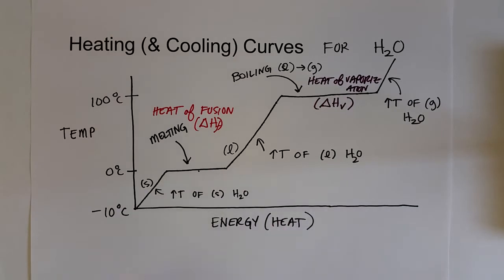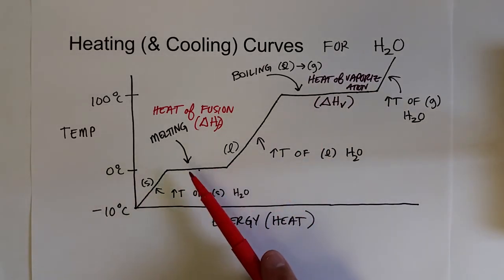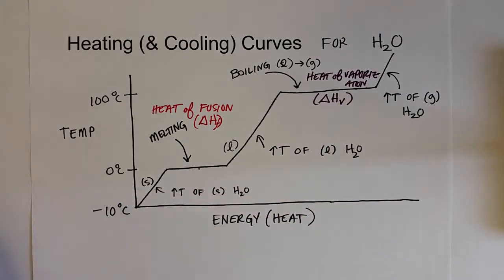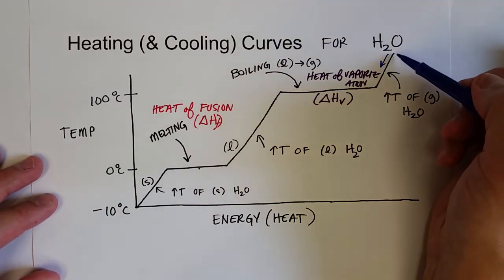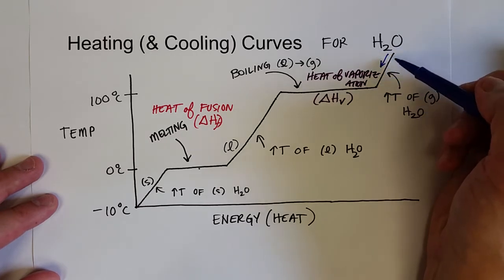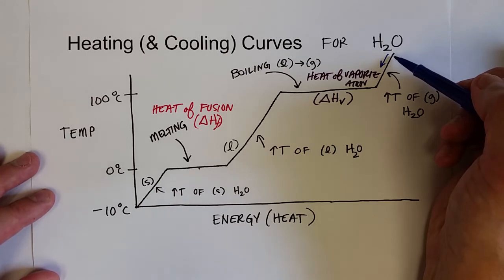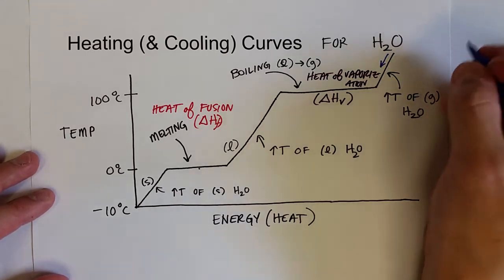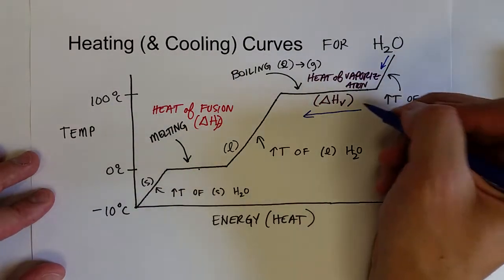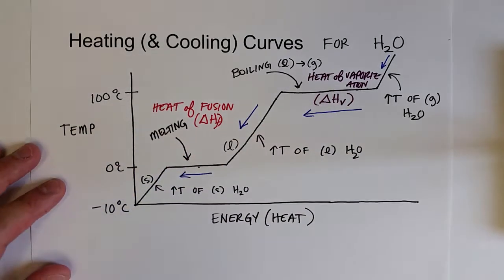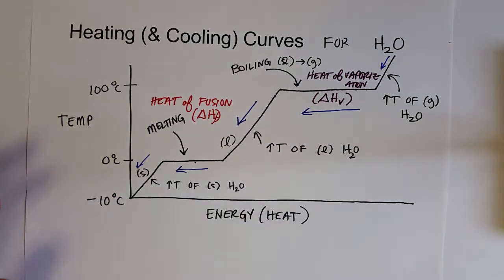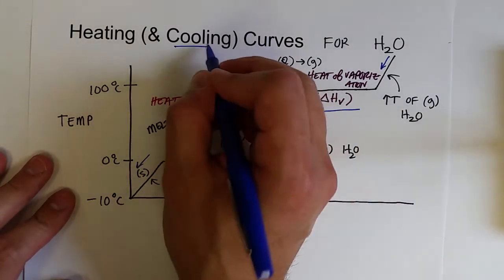So we're talking about adding energy to a substance to either increase the temperature — increasing the kinetic energy, which is what temperature measures — or to complete a phase change, either melting or boiling. The cooling curve is the same process in reverse: decreasing the temperature of the gas phase, condensing steam into liquid, decreasing the temperature of the liquid, freezing it, and then decreasing the temperature of the solid.